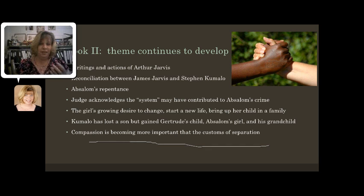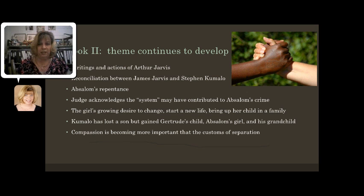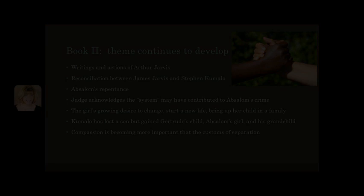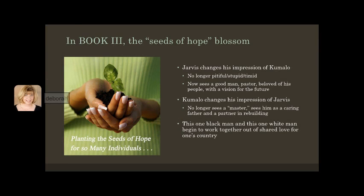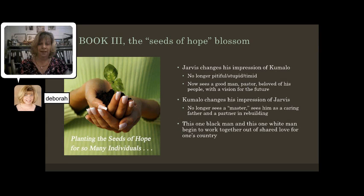So even though there are these traditions of separating the races, as people start to see each other in kindness, we see that reconciliation can start to happen. Under the structure of the novel, in book three, we see the seeds of hope that were planted all the way back in book one actually start to blossom.